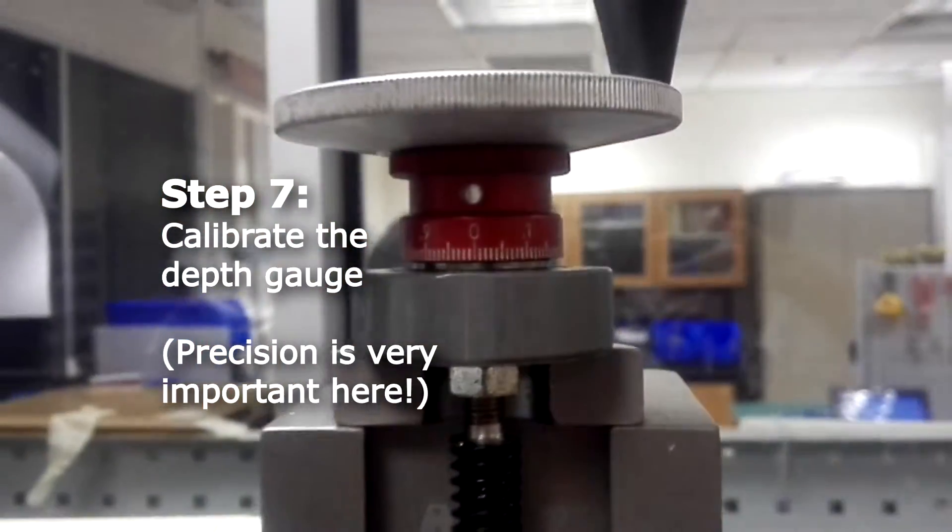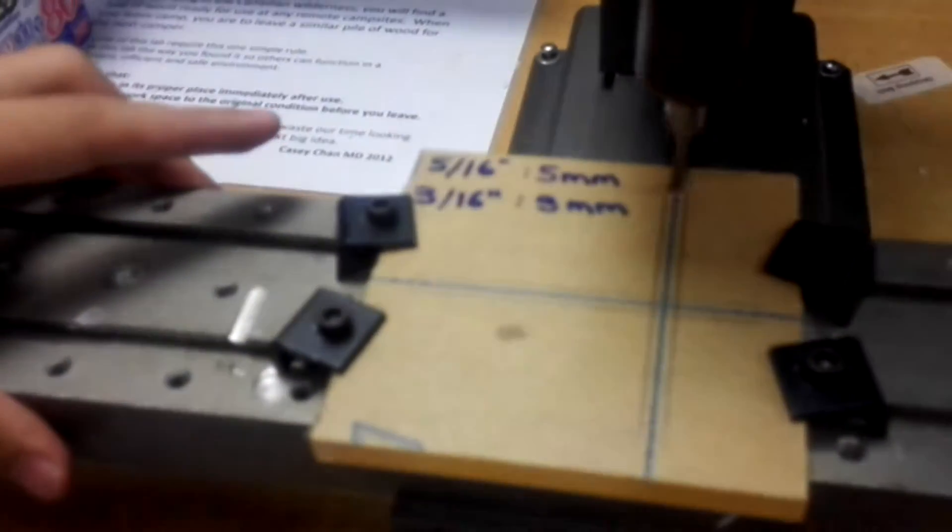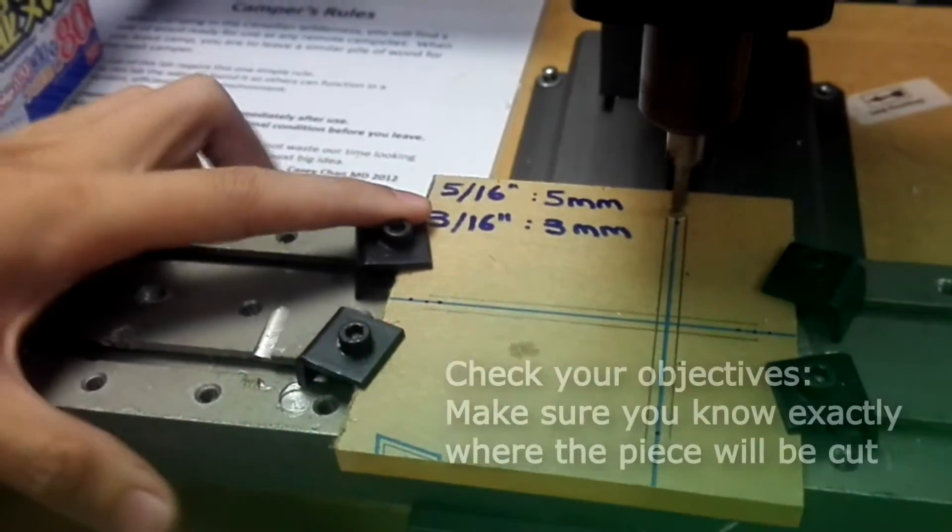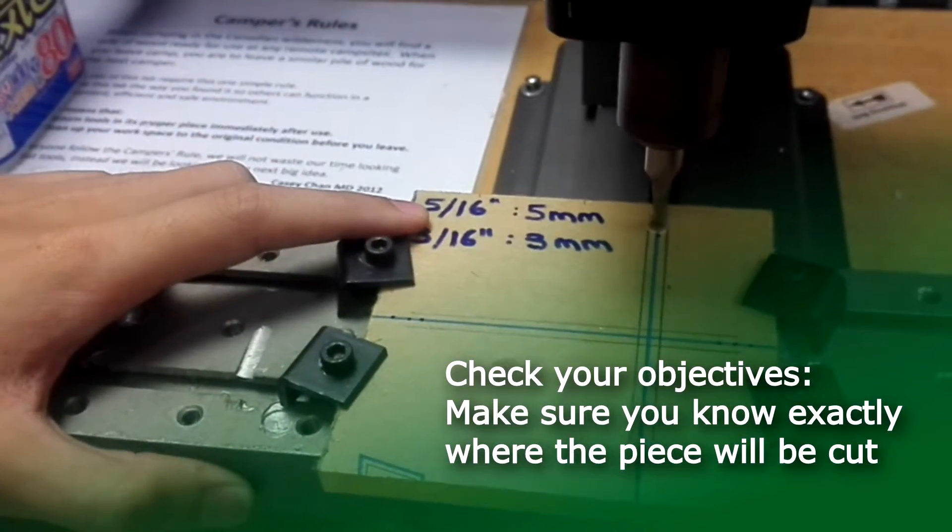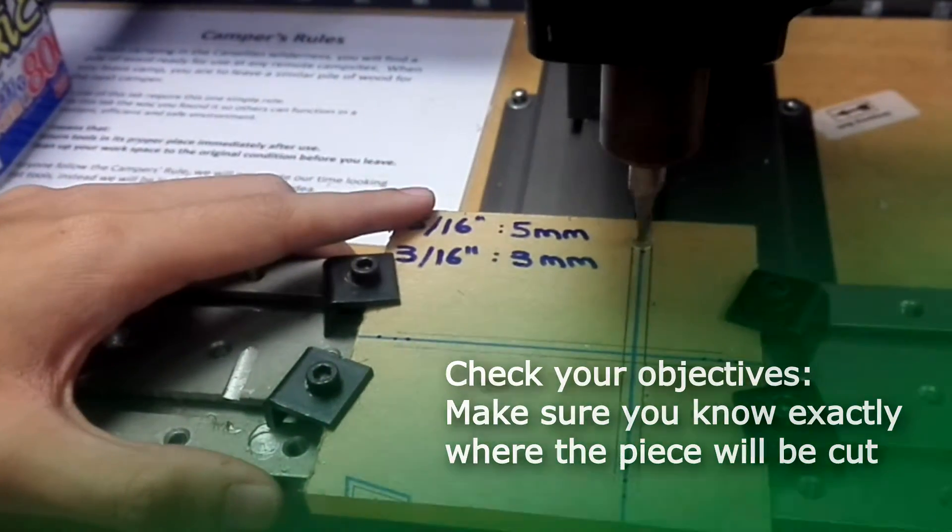Note for our 3/16 drill bit, we will be drilling 3mm. One revolution of the Z axis will take you 5mm. Therefore, we will only go 6 units down. Now that it is in place.